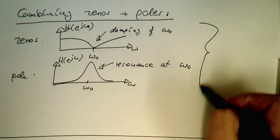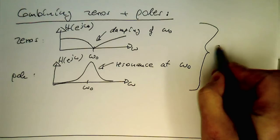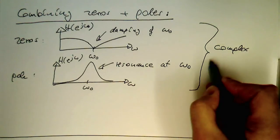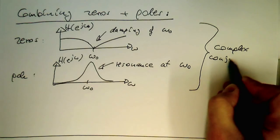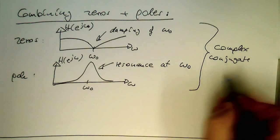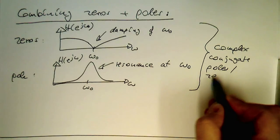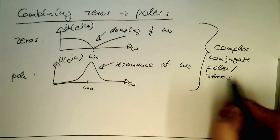Obviously, both zeros and poles, they are both complex conjugate poles and zeros. So both, second order.